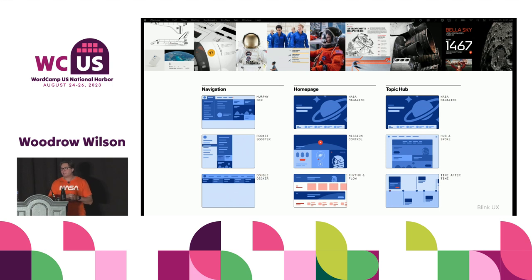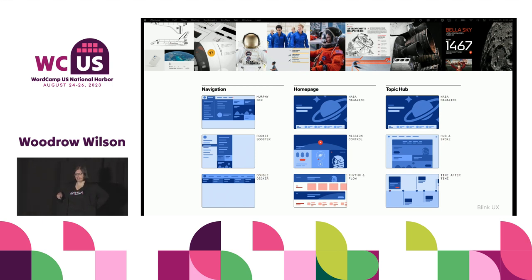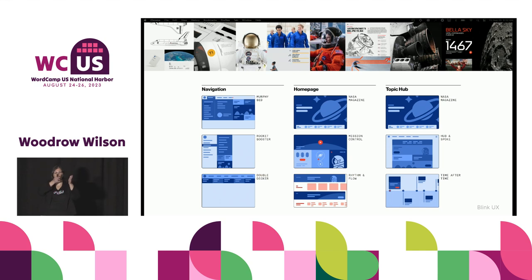In the design system, there's a concept of components and modules that lent themselves to blocks in the Gutenberg editor, and a concept of templates that lent itself to block patterns. At the time, we had around 100 sites built with WordPress but they were all using the classic editor — so there was a little hesitation about whether WordPress could really bring that design system to life. But as we prototyped and tested the integration of the design system using Gutenberg with our content creator users, it became clear that WordPress was the right solution. I'll quickly mention the navigation journey — we tried a rocket booster vertical menu, a double-decker horizontal more typical of USWDS, and ultimately landed on what we call the Murphy bed menu.